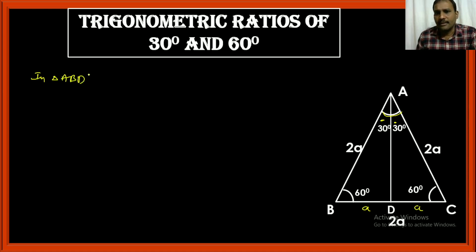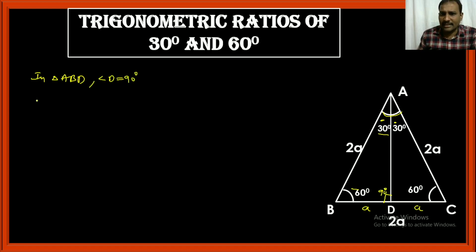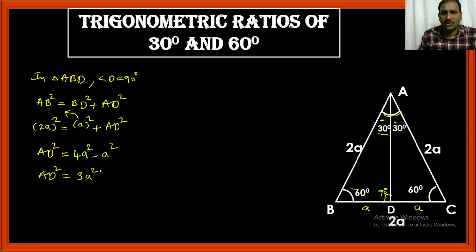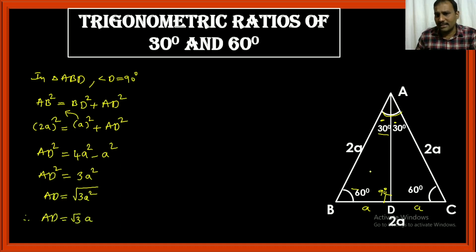Now let us consider triangle ABD. In triangle ABD, angle D is 90 degrees because 30 plus 60 plus 90 equals 180 degrees. It is a right-angled triangle. From Pythagoras theorem: AB² = BD² + AD². AB² is (2a)² = 4a², and BD is a, so 4a² = a² + AD². Therefore AD² = 3a², so AD = √3 · a.